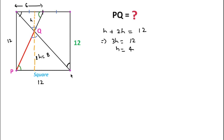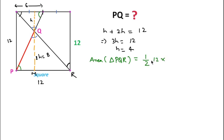Now, if we consider this point as R and this point as M, then we can find the area of triangle PQR. Area of triangle PQR equals one-half times base PR, which equals 12, times height, which equals 8. That gives us 48 square units as the area of triangle PQR.